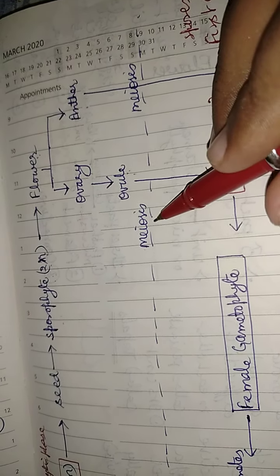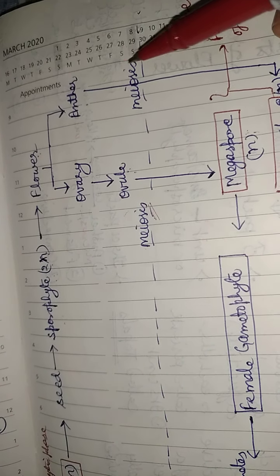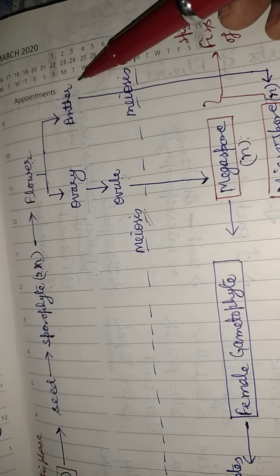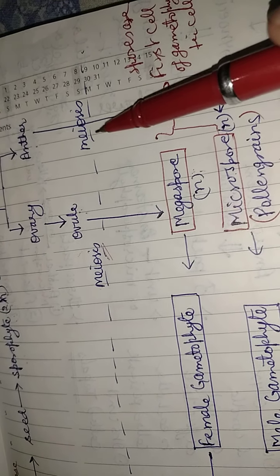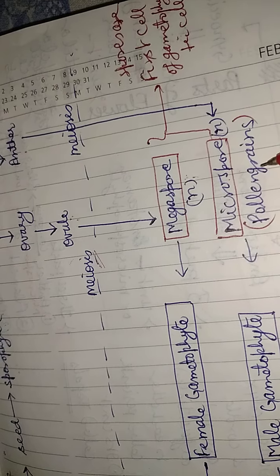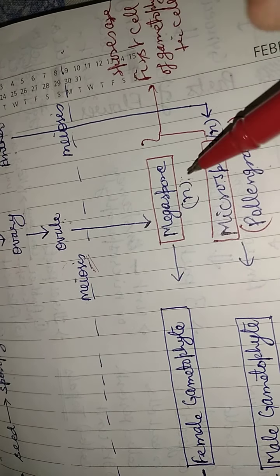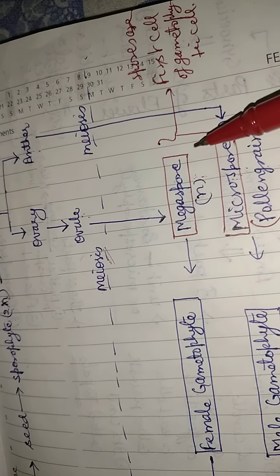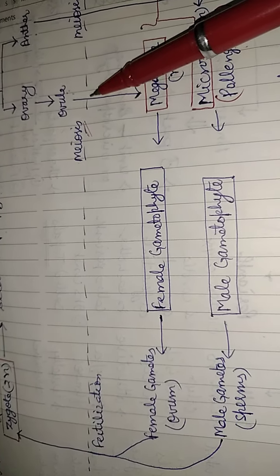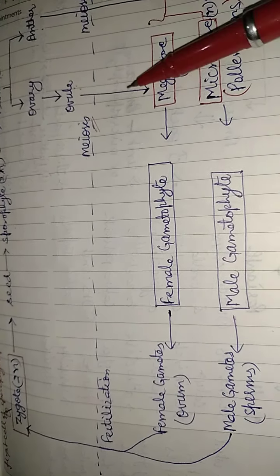Similarly, in the anther, meiosis occurs and forms microspores or pollen grains. Since meiosis occurs, the number of chromosomes becomes half — that means both spores are haploid. Thus we can see that the haploid phase, that means the gametophytic phase, develops starting from here.